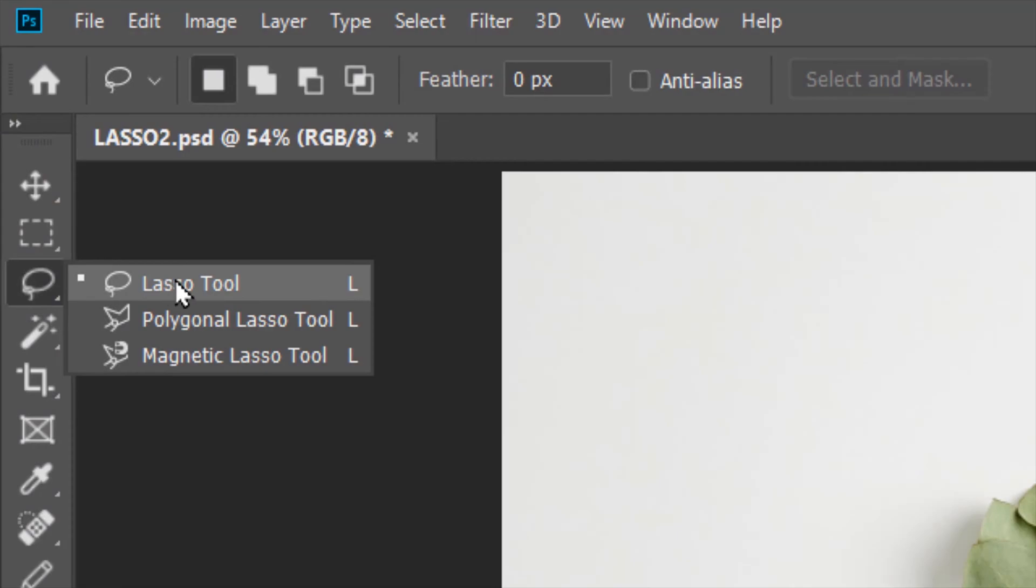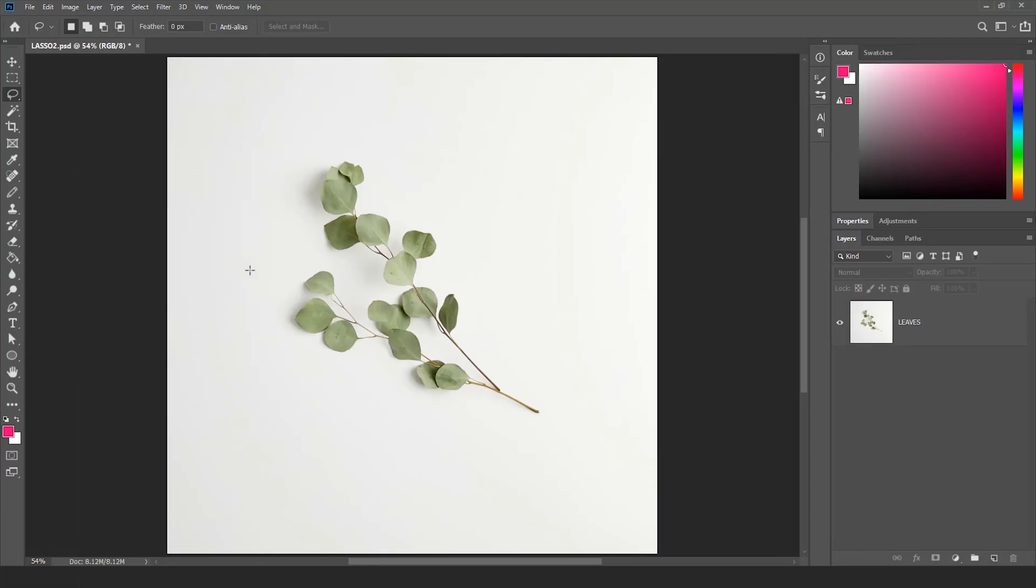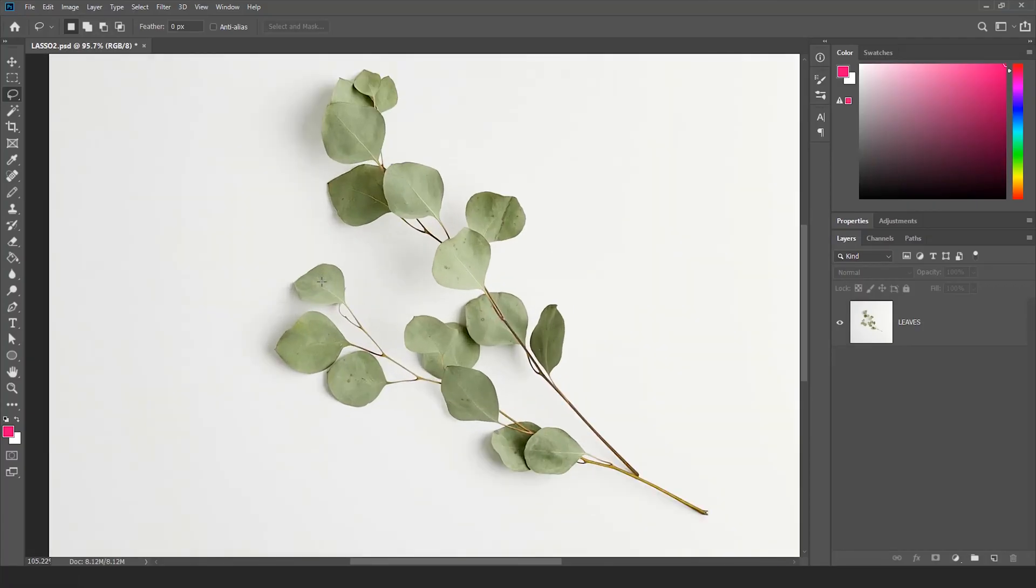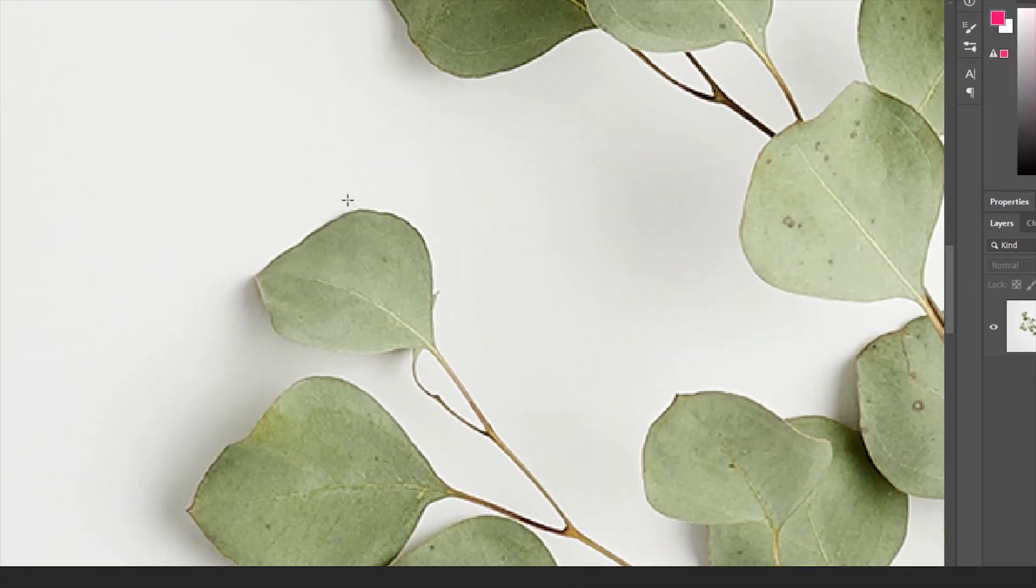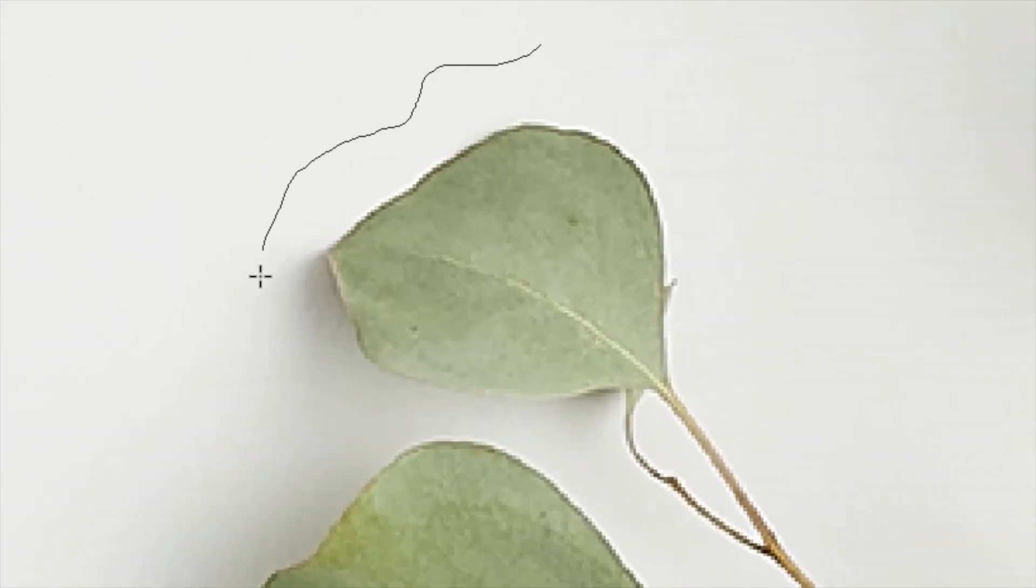With the lasso tool you can make free form selections like you are drawing with a pencil or a pen. Let me show you, make a free form selection with the lasso tool around this leaf. To complete the selection you can either try to close the selection manually or you can just release the cursor wherever you are and it will complete the selection.